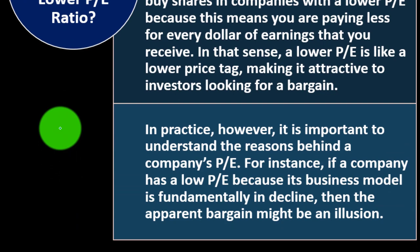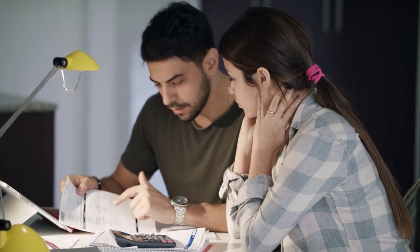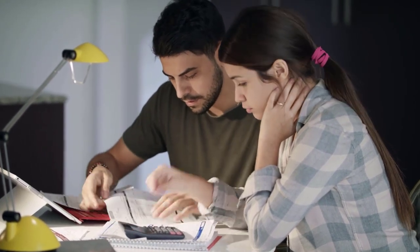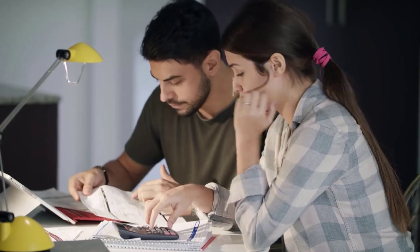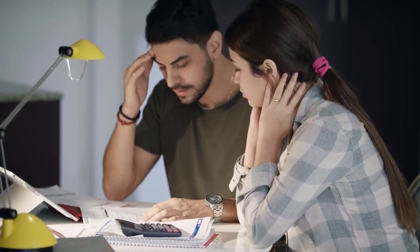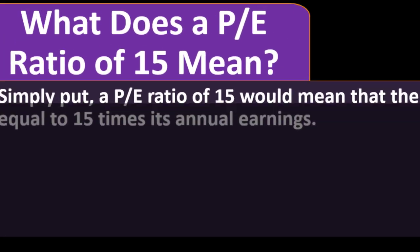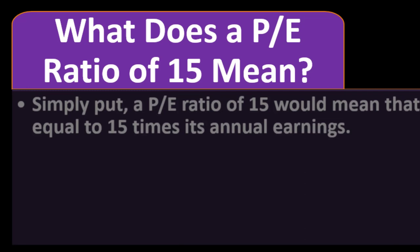In practice, it is important to understand the reason behind a company's P/E. What you really want to do is explain the 'why' behind the ratios — that should lead your investment decisions more than just a rule of thumb based on one metric. For instance, if a company has a low P/E because its business model is fundamentally in decline, then the apparent bargain might be an illusion.